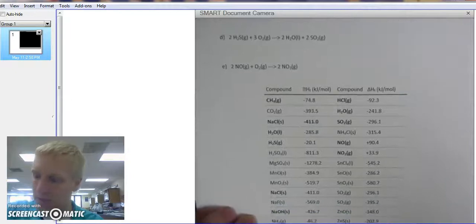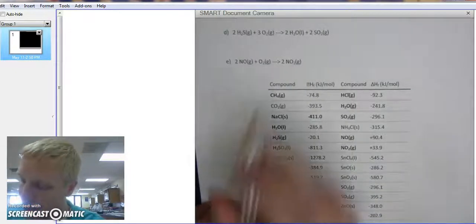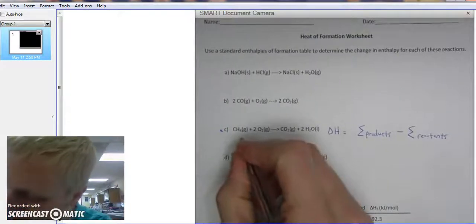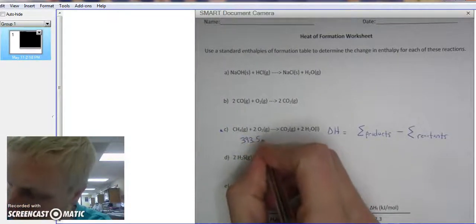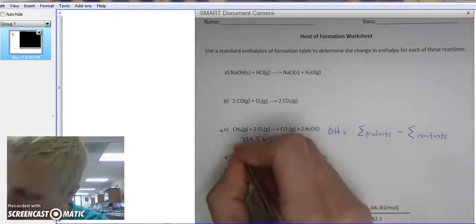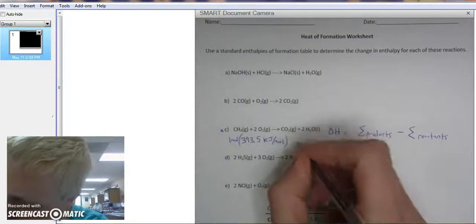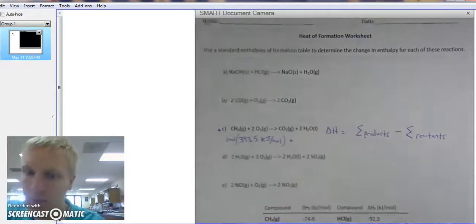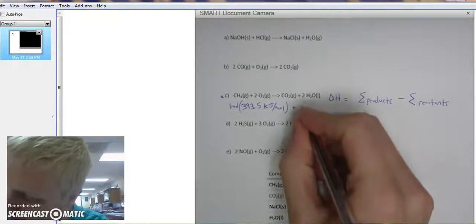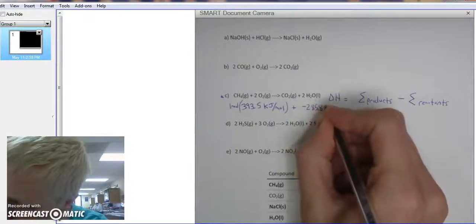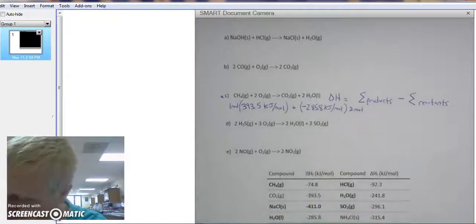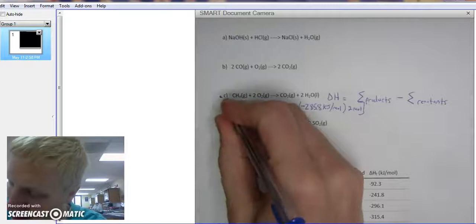We've got a nice little table right here, and we're looking for products, which are CO2 gas, so that's negative 393.5 kilojoules per mole. We've got just one of them, so we're going to multiply that by one mole. Plus our water liquid—H2O liquid is negative 285.8 kilojoules per mole. There's two of them, times that by two moles. Put this in brackets because that's our products.